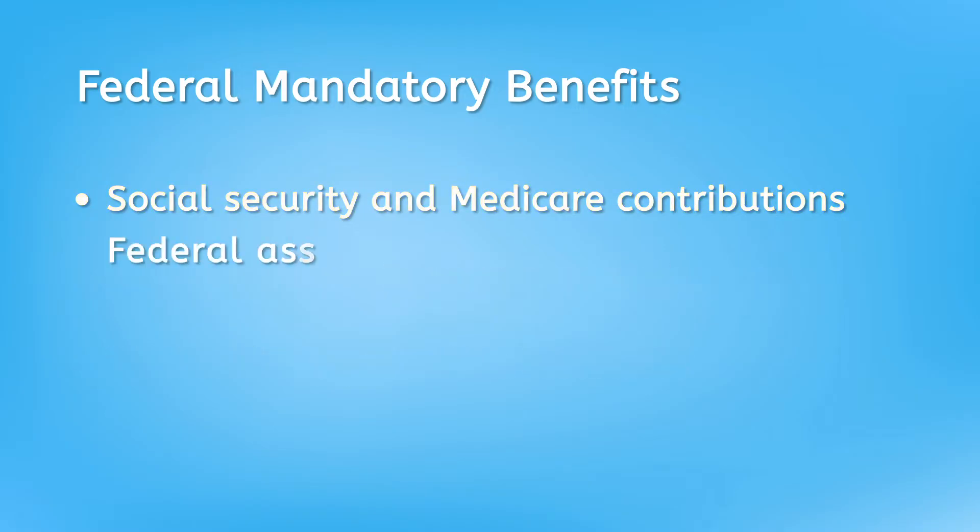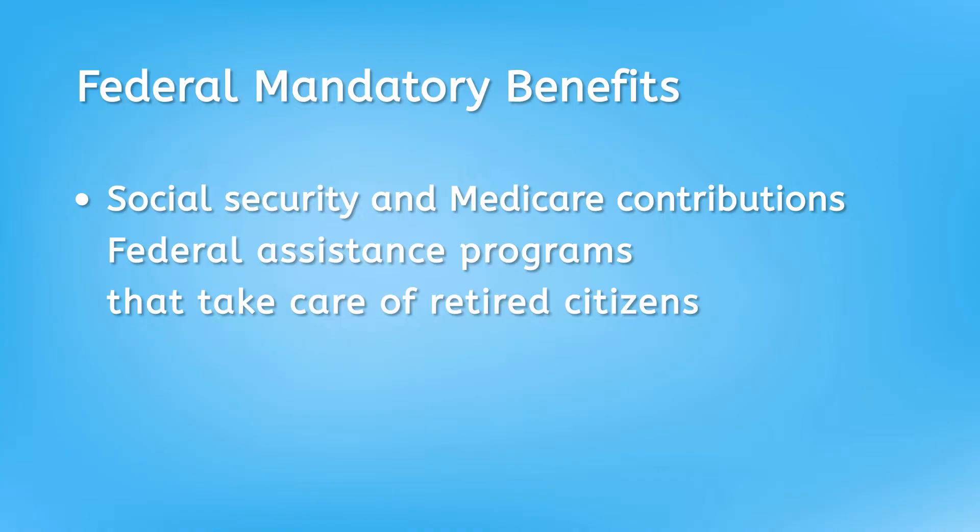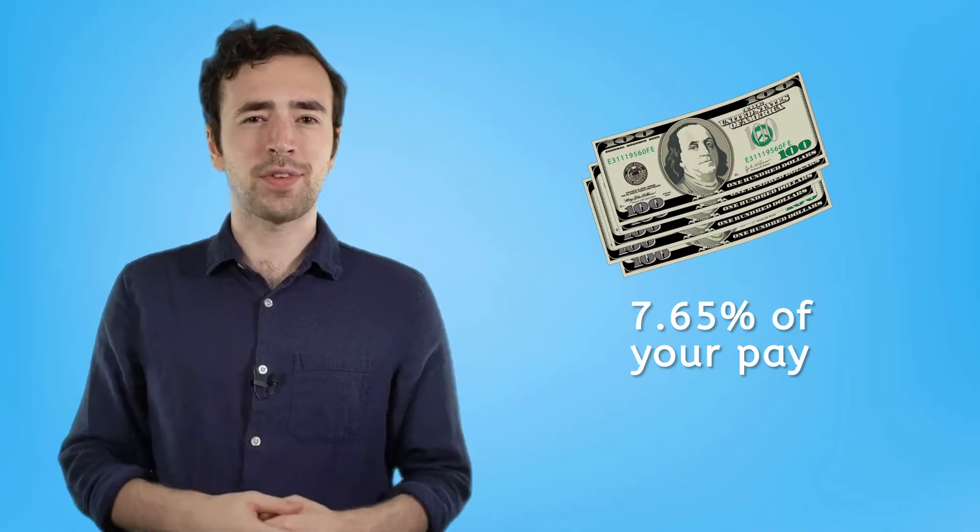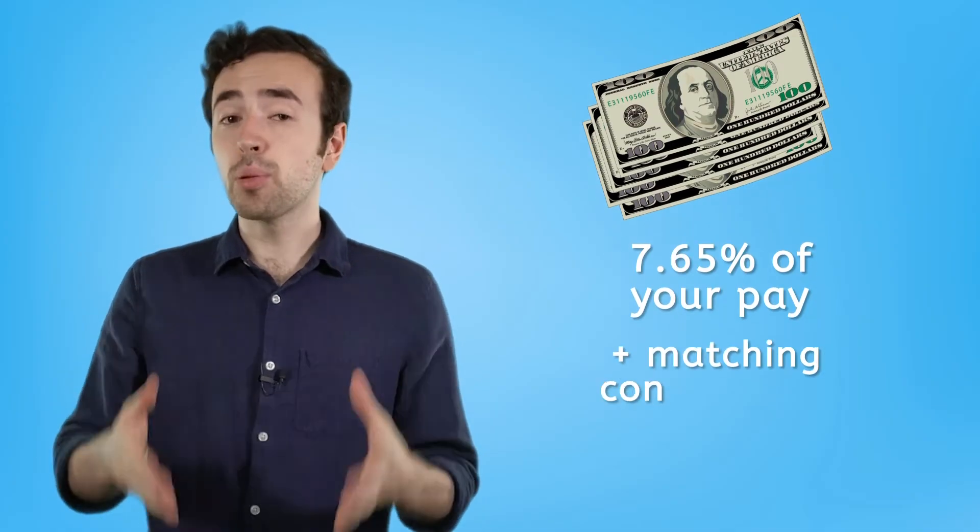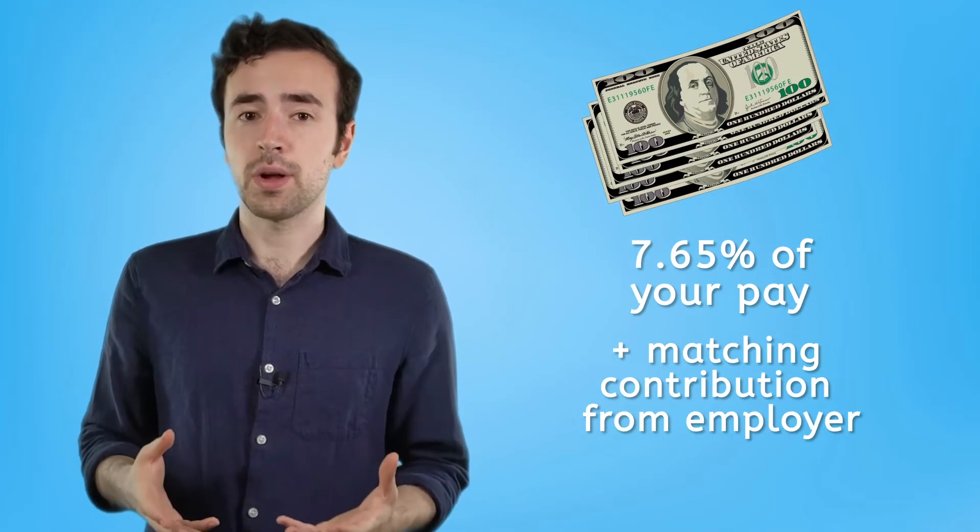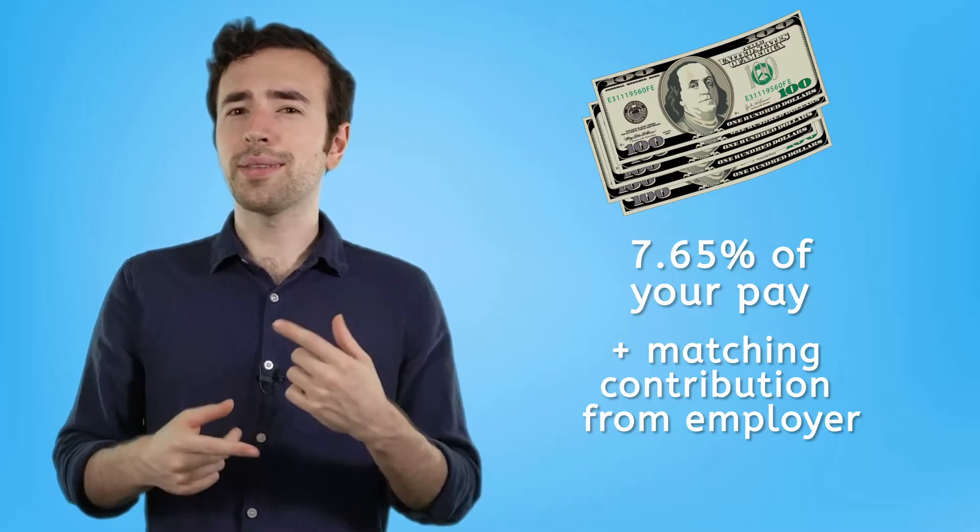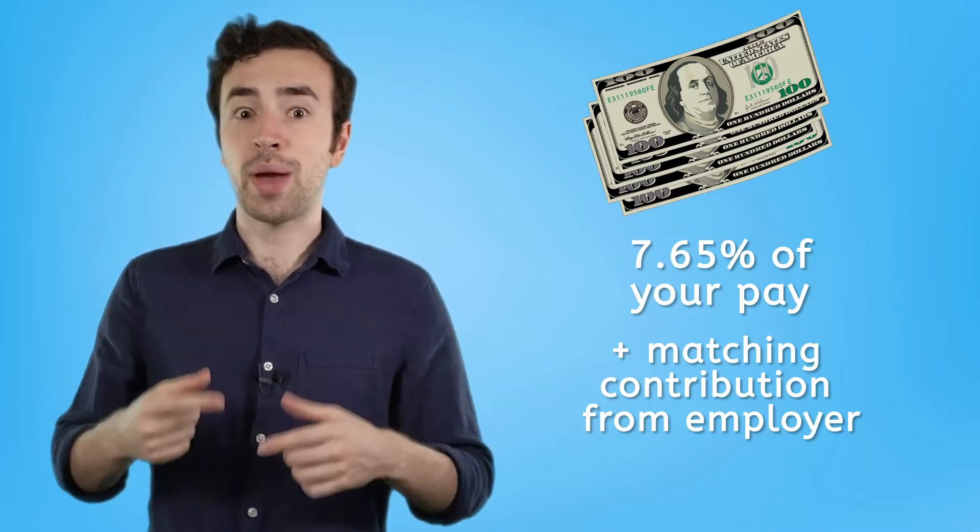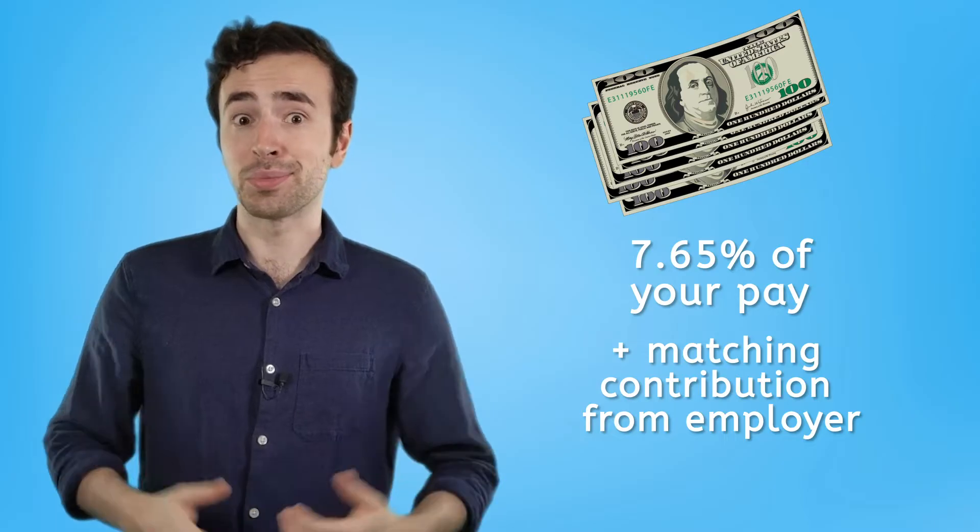Social Security and Medicare are federal assistance programs that take care of retired citizens. A small amount of your pay is automatically taxed to pay for these programs, 7.65% to be exact, and your employer pays the exact same amount as you do. So in a way, this benefit is like your employer paying half of your contribution themselves.